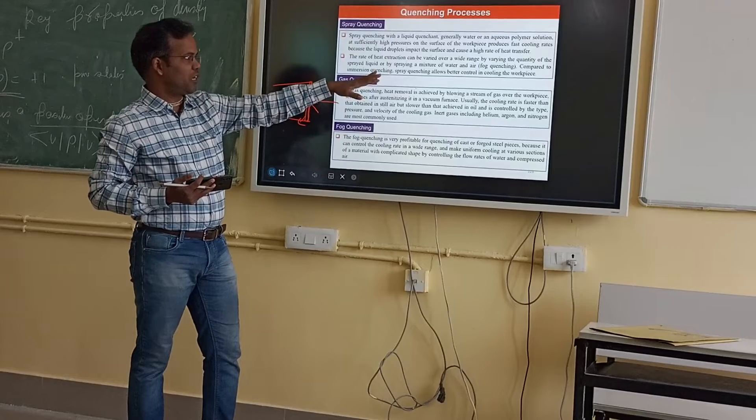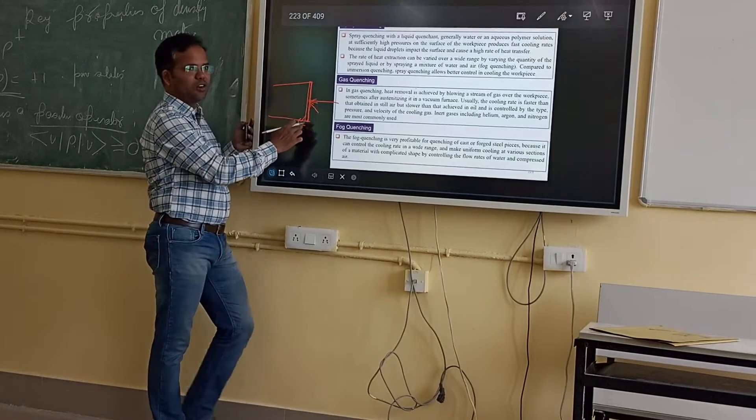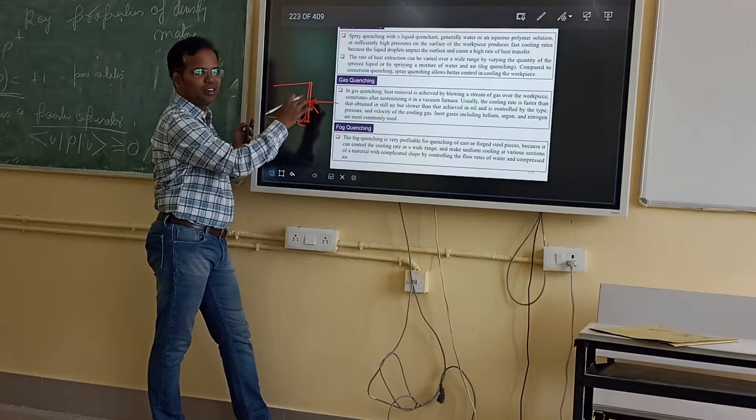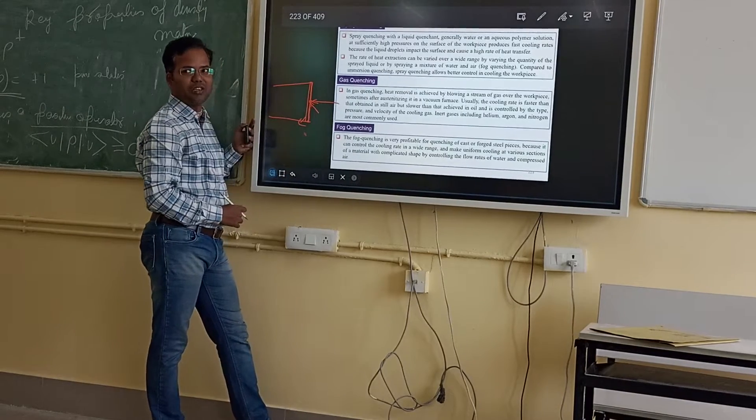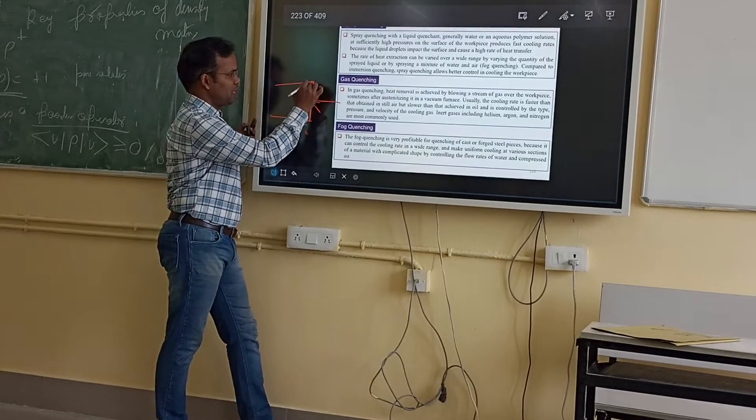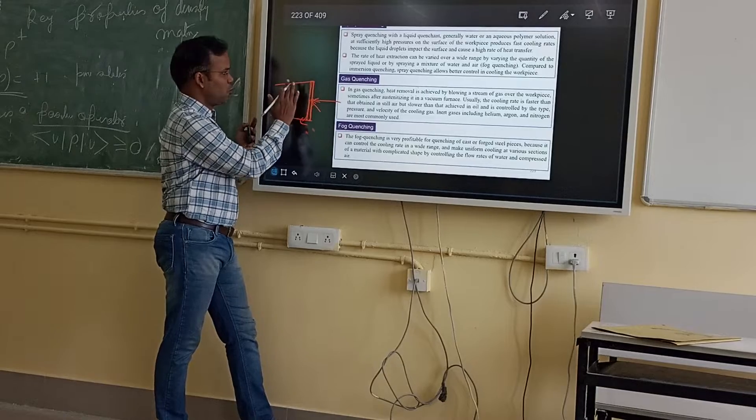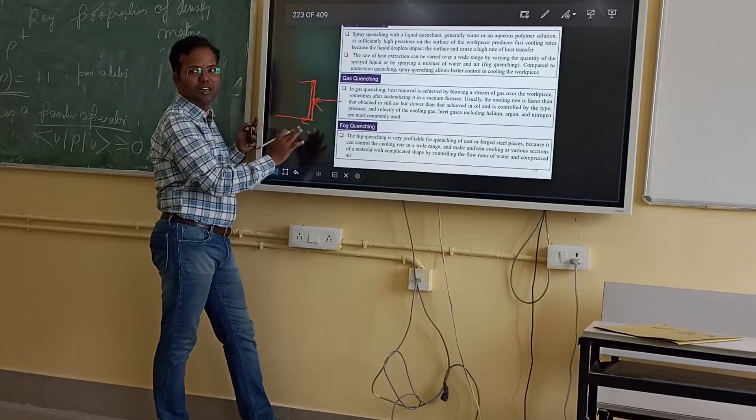Compared to other methods, spray quenching allows better control of the workpiece because you can easily control the thickness. You can easily control whatever part you want to quench. If you want to specifically treat the surface and don't need this part, you can easily do this.